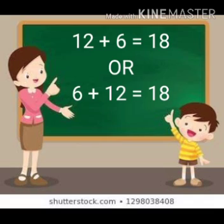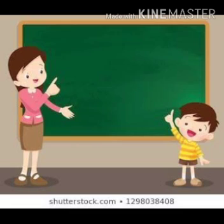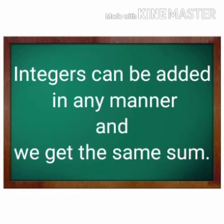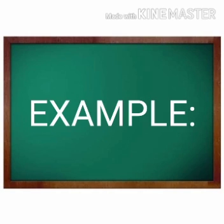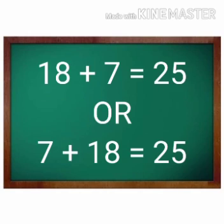In both cases, we get the same answer. That means integers can be added in any manner and we get the same sum. Take another example. 18 plus 7 is equal to 25, or 7 plus 18 is also equal to 25.